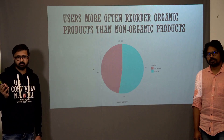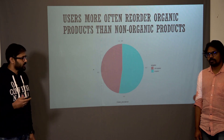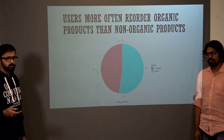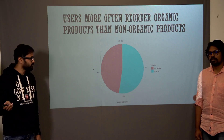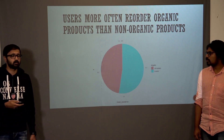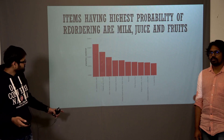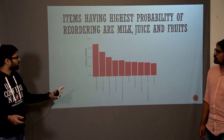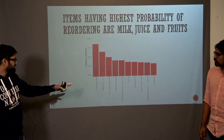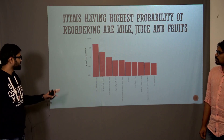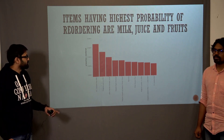Here we can see the distribution between organic and non-organic products ordered. Organic products have been ordered more by users, even though organic products constitute only 30% of Instacart's inventory. So even though only 30% of items are organic, there are more orders related to organic products than non-organic. This chart also shows the kinds of products most ordered — milk and low-fat milk are ordered most frequently, and we can also see the trend for bananas, fruits, and other items.